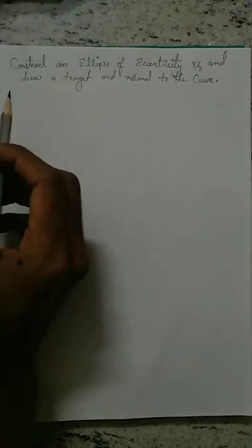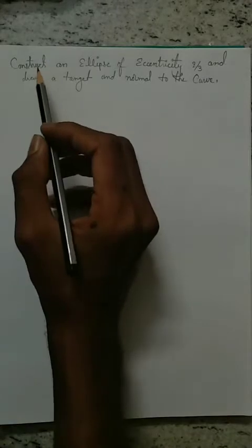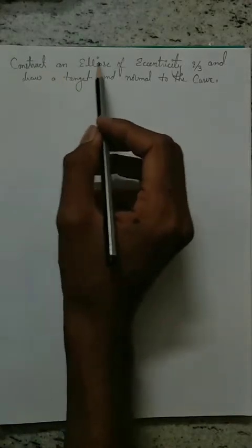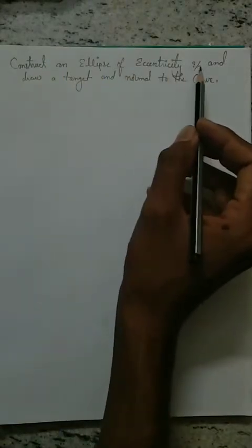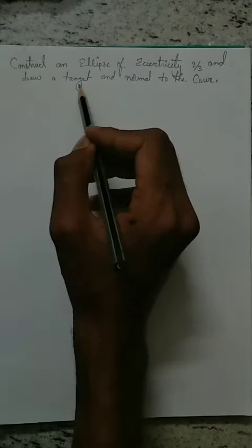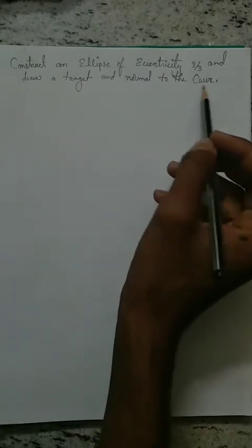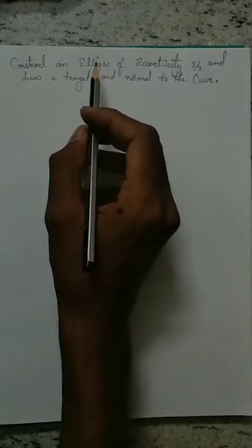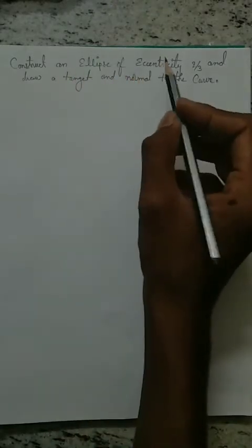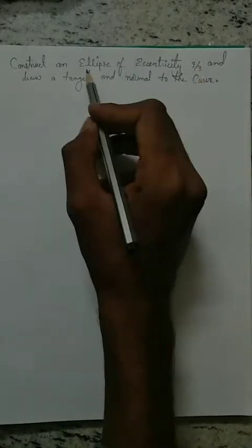Welcome to Civil Interview. This topic is how to construct an ellipse of eccentricity 2 by 3, and to draw the tangent and normal. We have eccentricity 2 by 3 and we have to construct an ellipse.